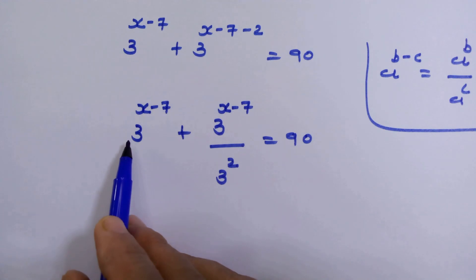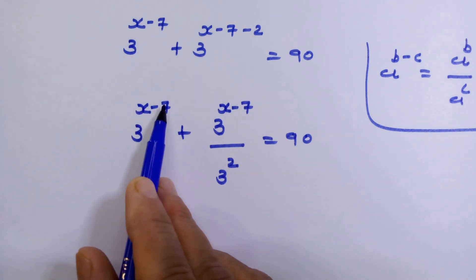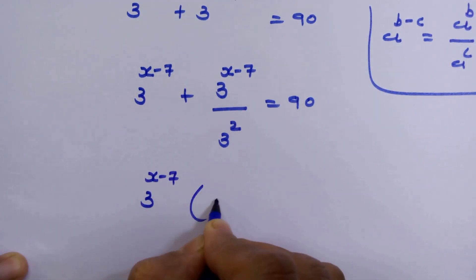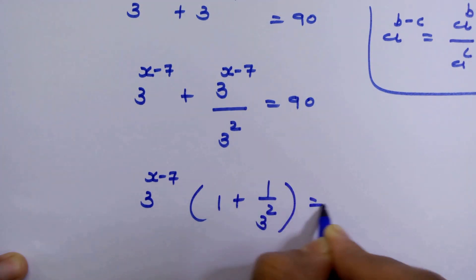In our next step we will take 3 raised to x minus 7 common from here. So 3 raised to x minus 7 times 1 plus 1 upon 3 squared is equal to 90.